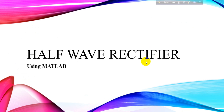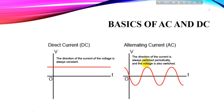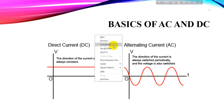Hello everyone, welcome to today's video where we will be diving into the fascinating world of electronics. Specifically, we are going to unravel the concept of half wave rectification, a fundamental process used in converting alternating current AC to direct current DC. If you are curious about how this process works and its applications, you are in the right place. Let's get started.